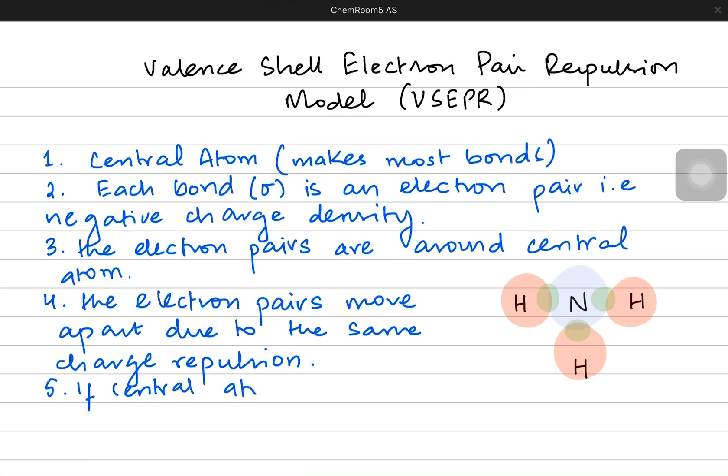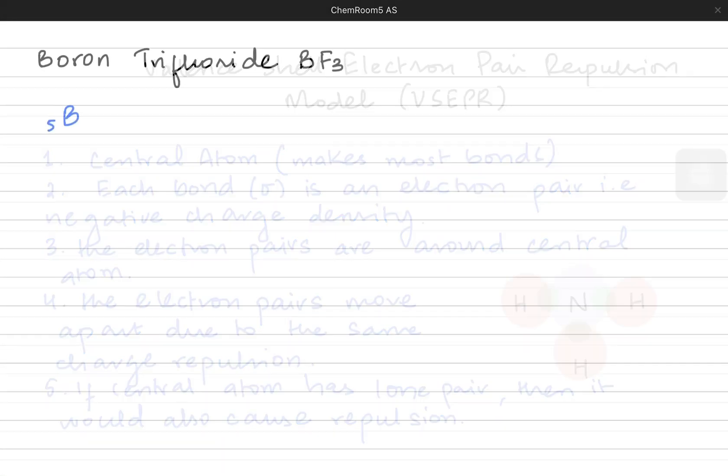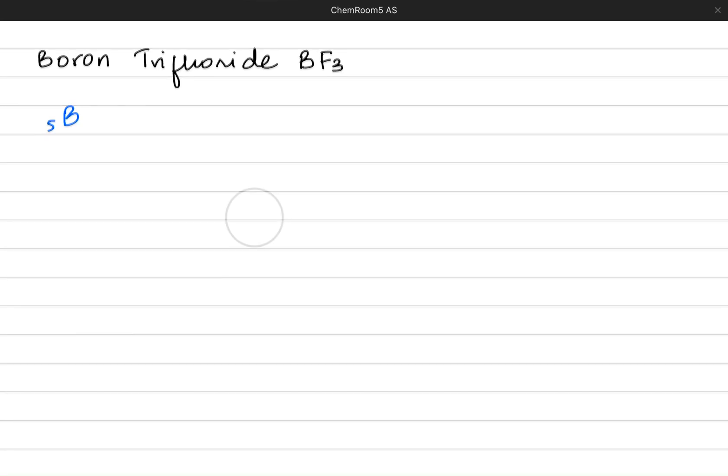The last point is, if the central atom has its lone pair, which means unbonded electron pair, generally group 5 and group 6 elements have their lone pairs. So if the central atom has lone pairs, then it would also cause repulsion. And lone pairs have more repulsion than bond pairs.